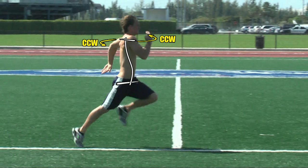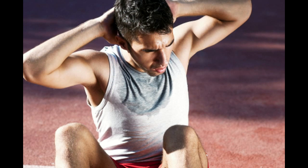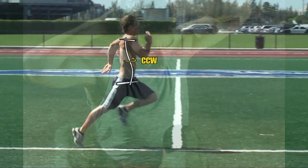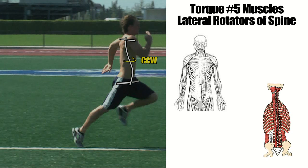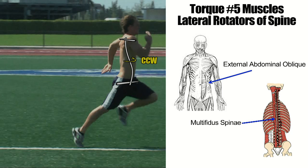In order for this to take place, the torso would also have to rotate in the same direction to assist this movement, much like it does when you are performing oblique sit-ups. The muscles involved in rotating the torso in this counterclockwise direction are known as the lateral spine rotators, and their names are the external abdominal oblique, multifidus spinae, and rotatoris spinae muscles.